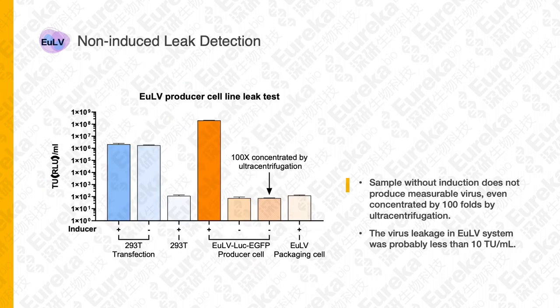Another concern about lentivirus stable producer cell lines is non-induction leakage. We chose clones with titer higher than 400 million TU per mL for this leak study. The orange column indicates virus titer after induction, which is over 400 million TU per mL. The background noise measured in 293T and EULV packaging cell lines is around several hundred TU per mL. The producer cell line without inducer produces virus at the same titer as background — around 100 TU per mL. Even when culture medium is concentrated 100 times by ultracentrifugation, the measured viral titer remains the same as the background control, indicating the virus leak in the EULV system is probably less than 10 TU per mL.